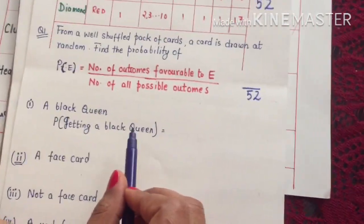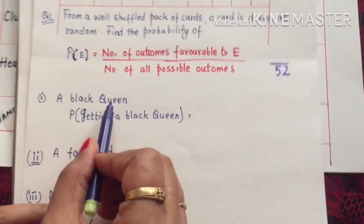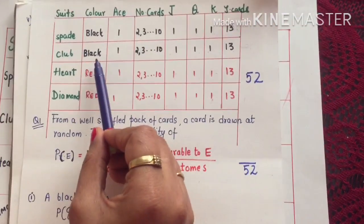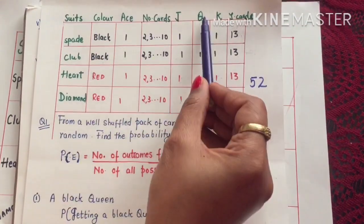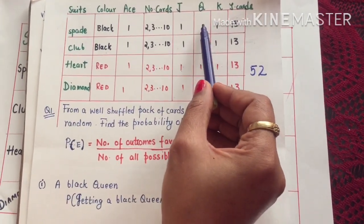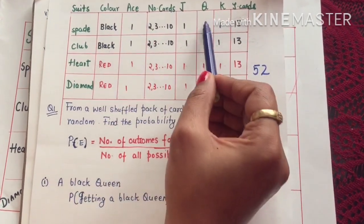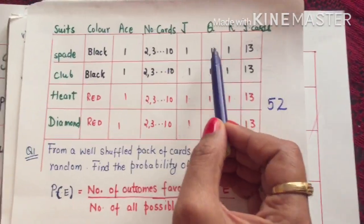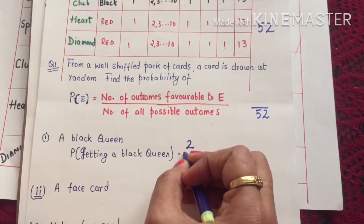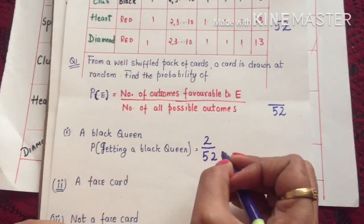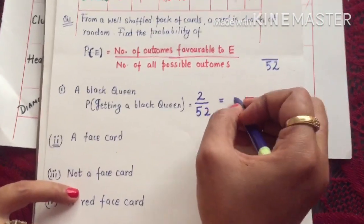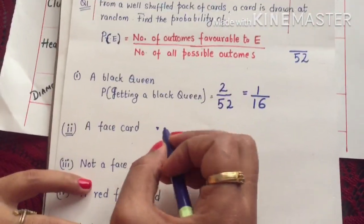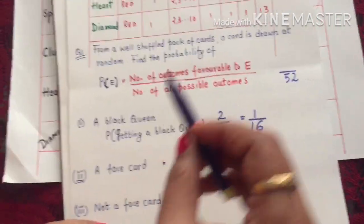First example: probability of getting a black queen. We need a card that is both black and a queen. There are two such cards — the black queens from Spade and Club. So the favorable outcome is 2 and possible outcomes is 52, giving probability of 2/52, which reduces to 1/26.